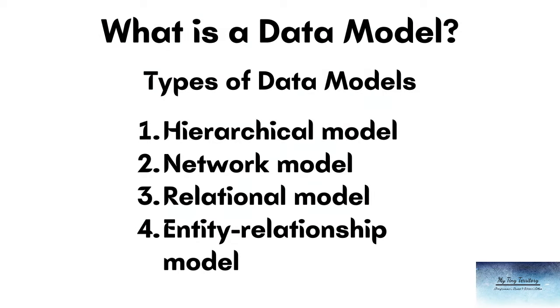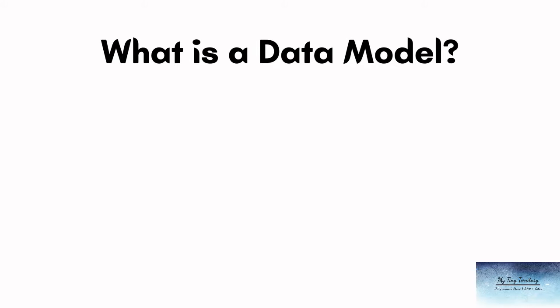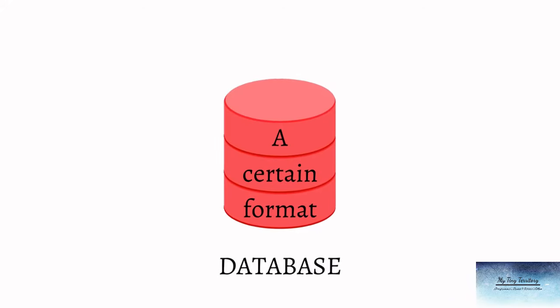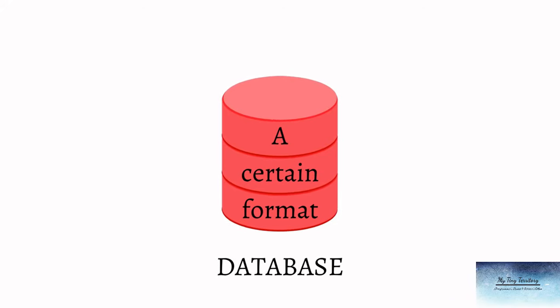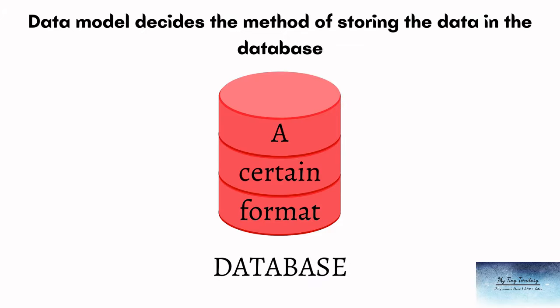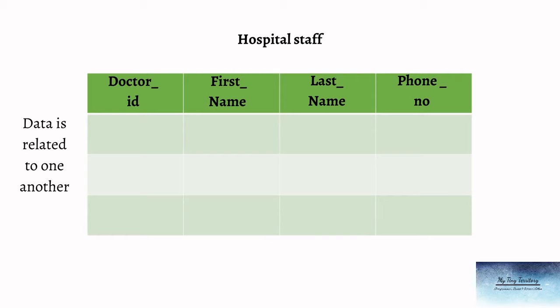Hello friends. In this video we will be talking about data models. A data model is an abstract model that organizes elements of data in a certain format. That means when the data is stored in the database it needs to be stored in a certain format or in a particular structure. So a data model decides the structure or the method of storing the data in the database. Also the data in the database is related to one another, and it's the job of the data model to define how the data will be related to one another.